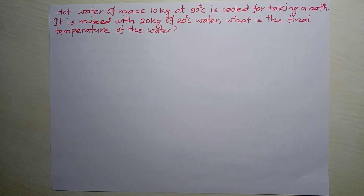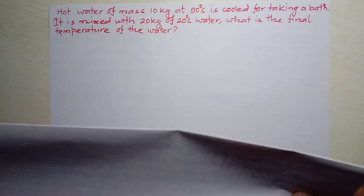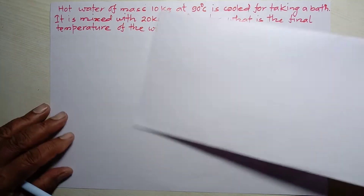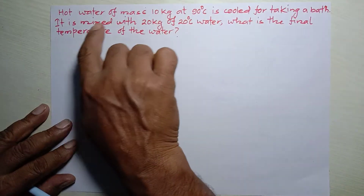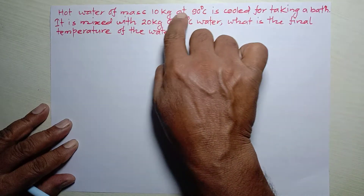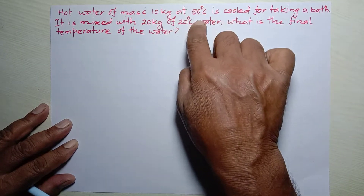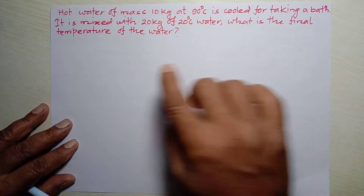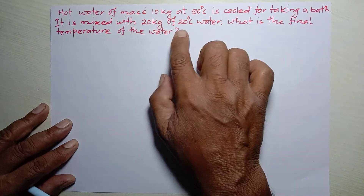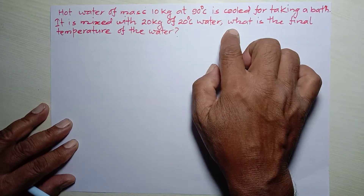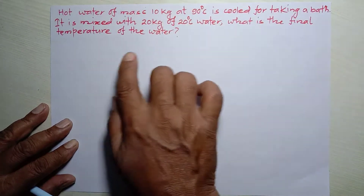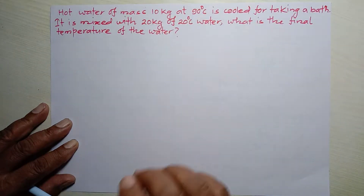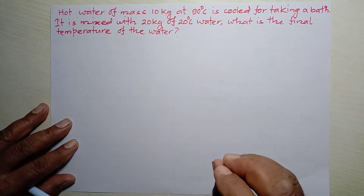We are going to solve a numerical problem related to the chapter Heat. The problem is: hot water of mass 10 kg at 90 degree Celsius is cooled for taking a bath — it is mixed with 20 kg of 20 degree Celsius water. What is the final temperature of the water?